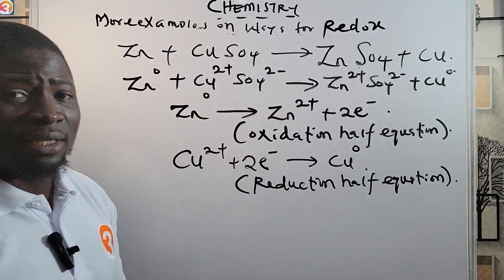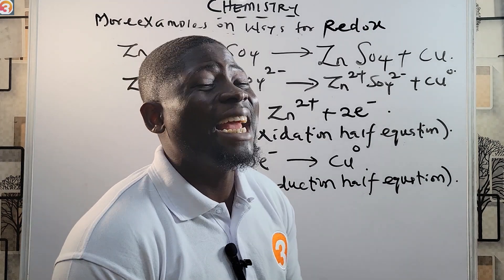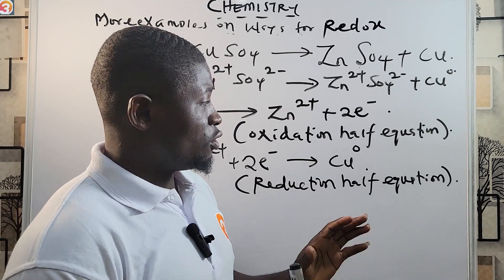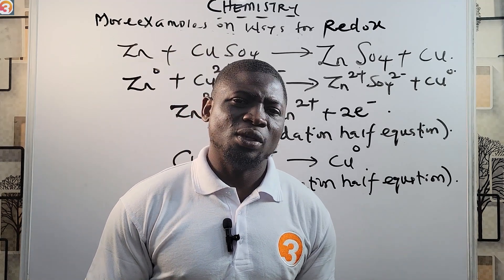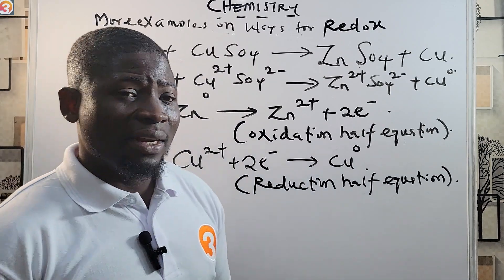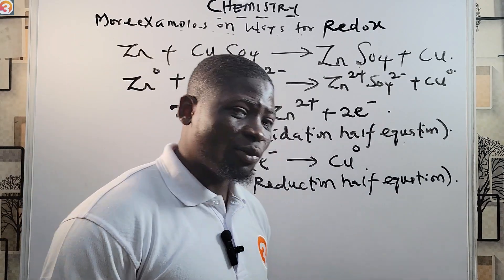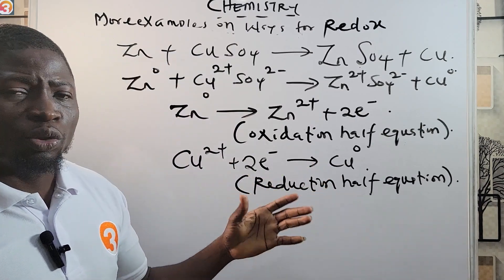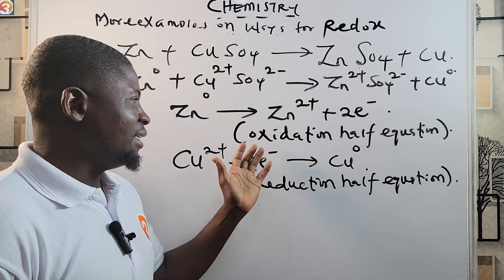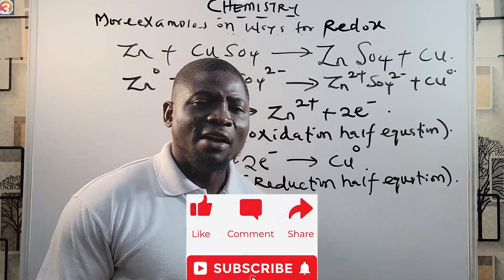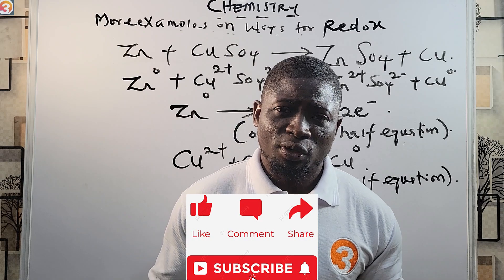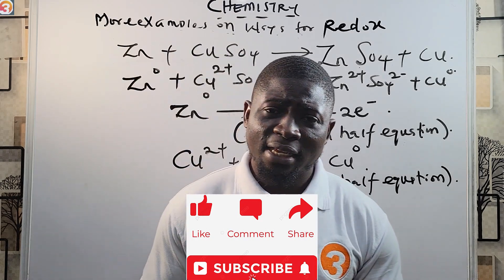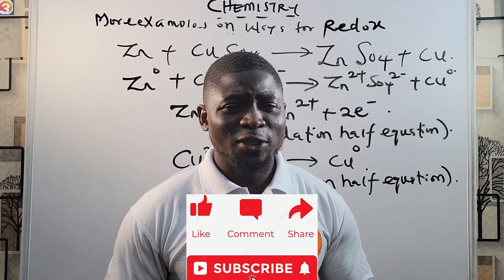I'm sure you have fully understood this. If not, feel free to comment and we'll get back to you as soon as possible. In this episode we learned about disproportionation reactions and how to divide a redox equation into two half equations — the oxidation half equation and the reduction half equation. In the next class we'll see another interesting part of redox reactions. My name is Master T and I'll see you in the next episode.